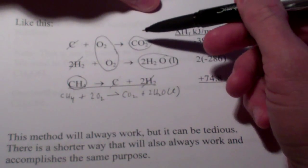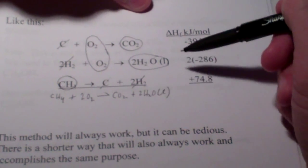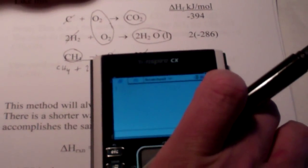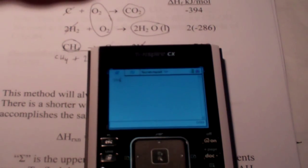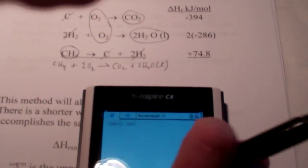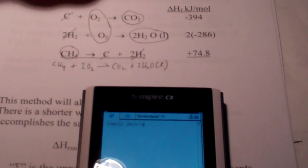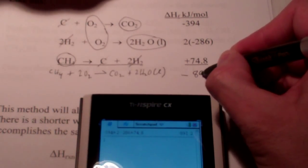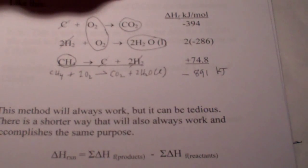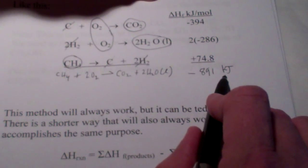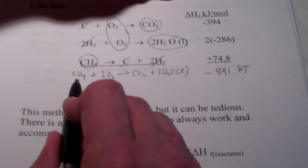According to Hess's Law, if the equations add to give the reaction you're after, the heats will add to give the heat of that reaction. So: negative 394 plus 2 times negative 286, plus 74.8, gives us — to the nearest whole number — negative 891 kilojoules. That tells us this reaction gives off 891 kilojoules of heat per mole of methane burned in the presence of oxygen.